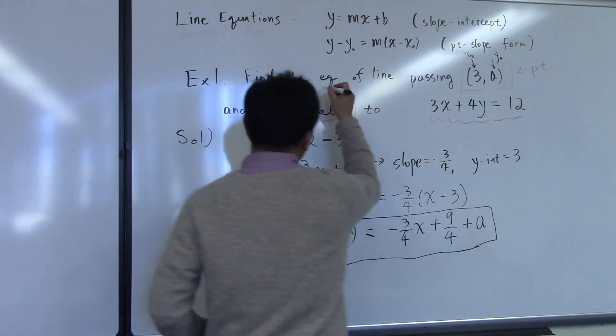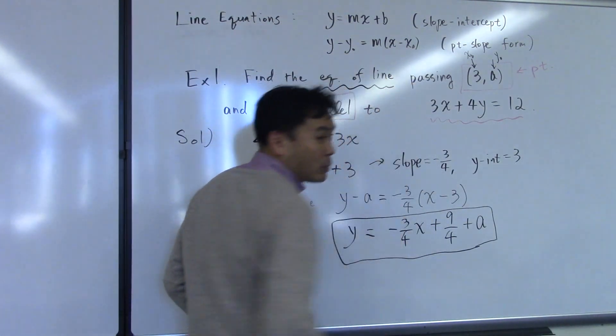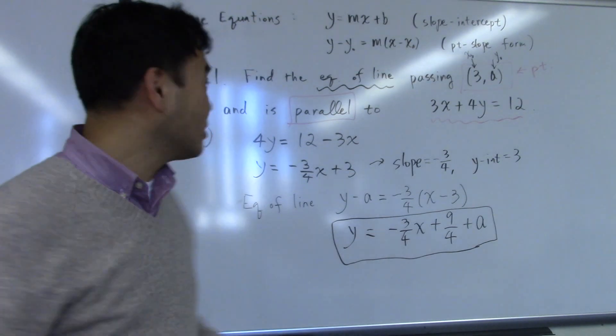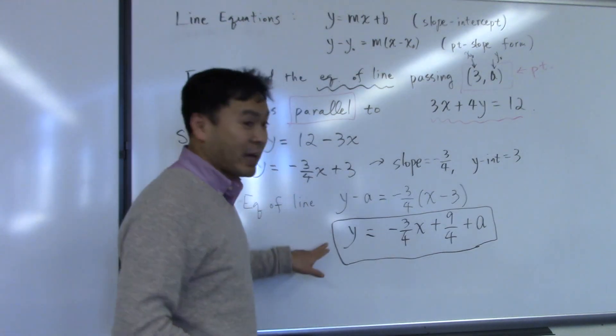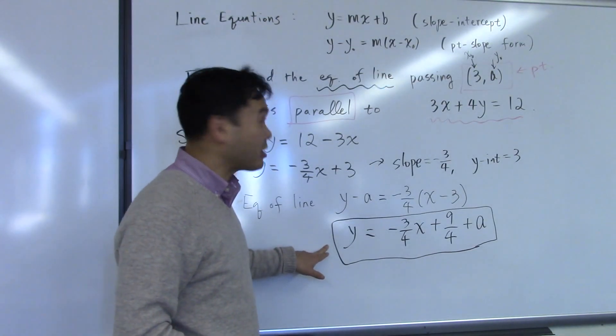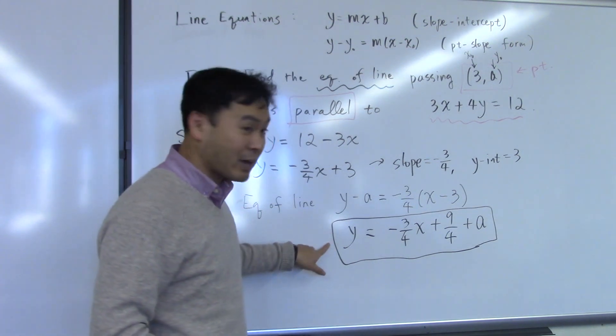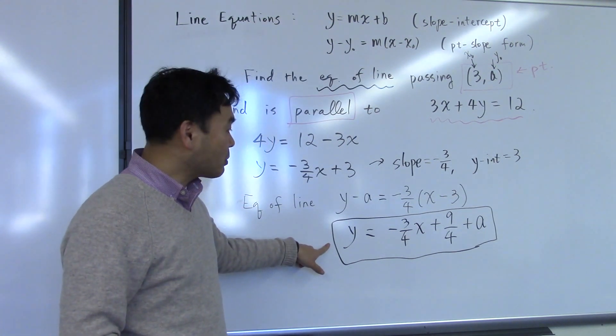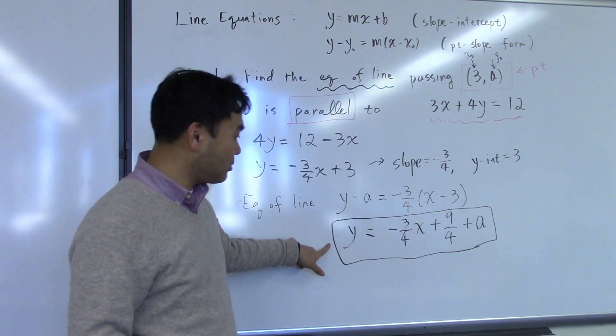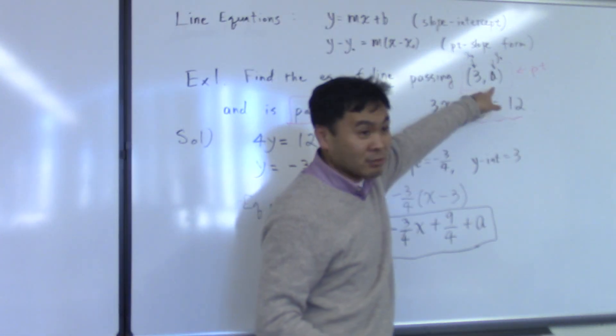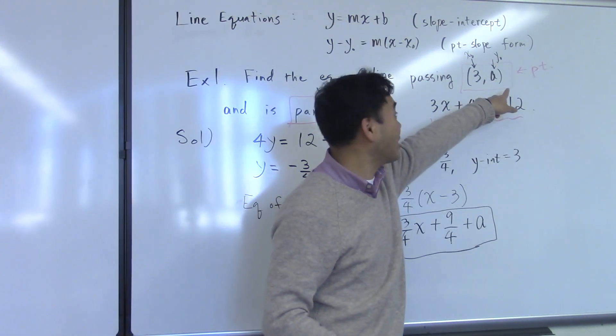We're trying to find the equation of the line. So here, the equation of the line is the question, and therefore the answer should be in the form of an equation of the line, which is this one. So this has to be the answer. But part of the answer contains this a, because in the information given about this line, you have this a.